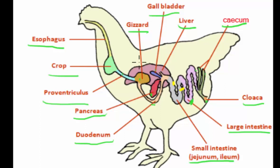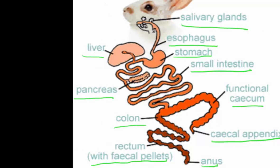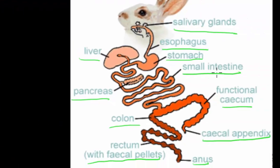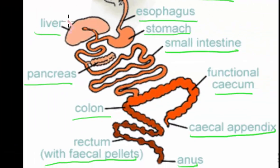The food then goes to the cloaca. In the rabbit, food mixes with saliva, passes through the esophagus to the stomach where enzymes act upon it, then to the pancreas which secretes enzymes, then to the small intestine. They both have small intestines where the food passes through. The chicken has the jejunum and the ileum in its small intestine. They equally both have the pancreas and the liver.